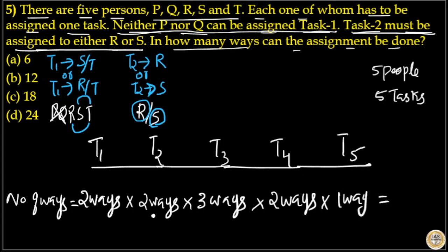So the total number of ways is 2 × 2 = 4, 4 × 3 = 12, 12 × 2 = 24 ways. So option D is your answer.